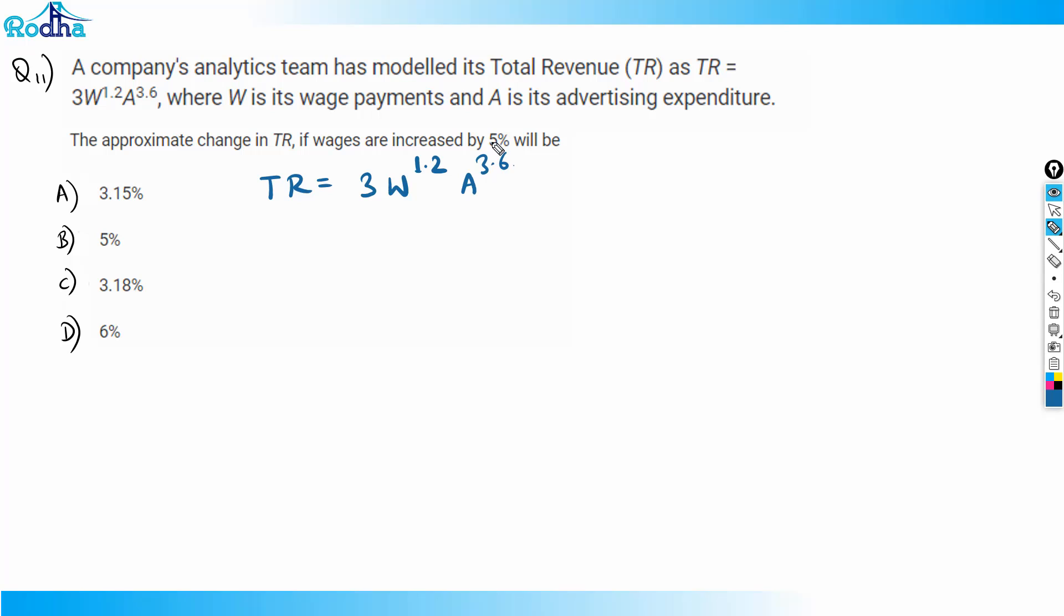So understand this. If I write a new TR, or let's say TR dash, what is TR dash? Wages will increase by 5 percent, so can I write here 3 times 1.05W, and this power is still 1.2, and A power is still 3.6.